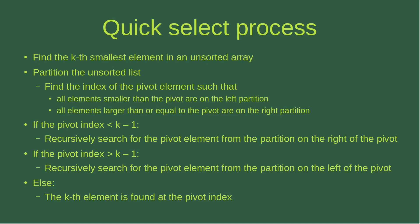After setting up the partitions, we can check the following situations. If the pivot index is smaller than k minus 1, we recursively search for the pivot element from the partition on the right. If the pivot index is larger than k minus 1, we recursively search from the left partition. If these two conditions fail, the kth element is already found at the pivot index.